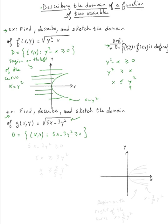5x - 3y² ≥ 0 means 5x ≥ 3y², so dividing by 5: x ≥ (3/5)y². We graph x = (3/5)y², which looks like a parabola opening to the right. We want all points such that x is bigger than that, meaning the domain is the region on the right of the curve x = (3/5)y².